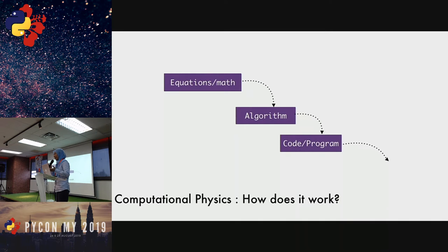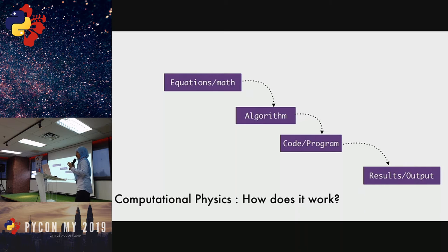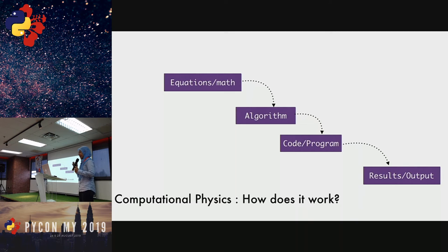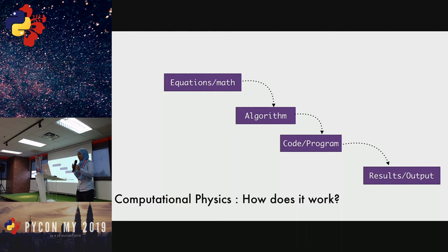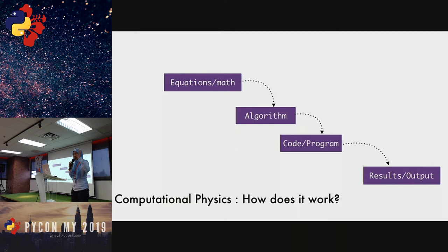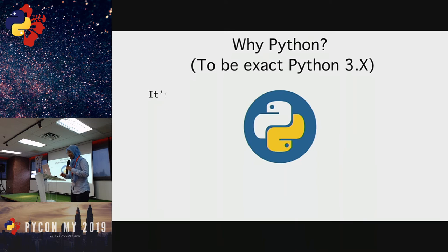The computational physics workflow is straightforward in concept: start from an equation or mathematical formulation, transform it into an algorithm, write code, and produce a result. But in practice it requires extensive testing and debugging. You need to verify accuracy either by comparing to the analytical solution or by comparing with experimental data. If the two do not agree, you must revise your code — it requires a lot of work.